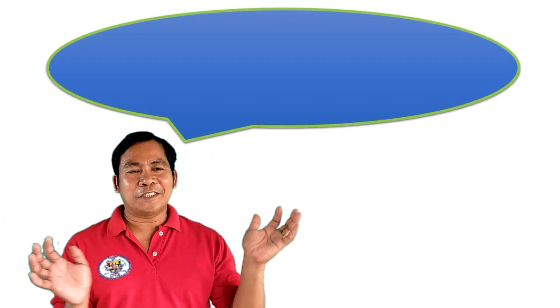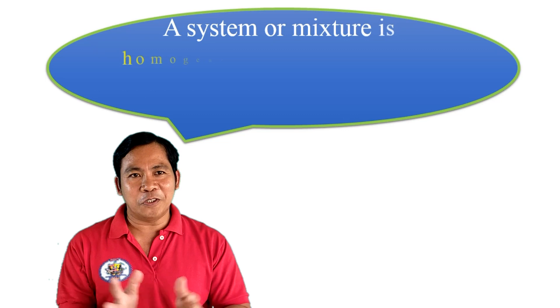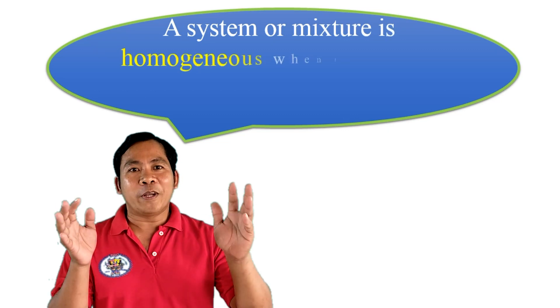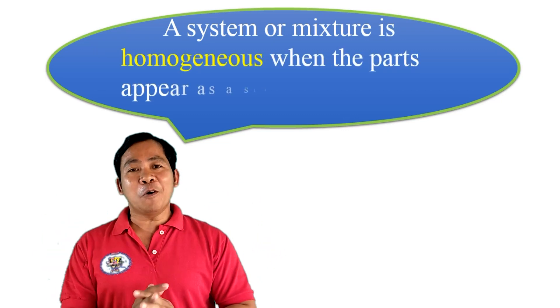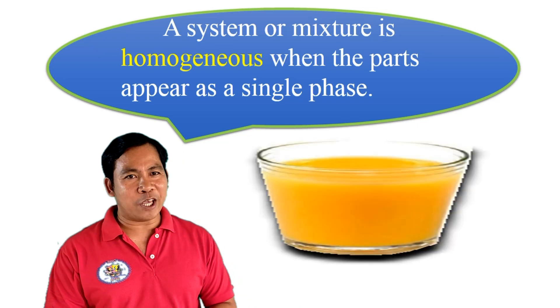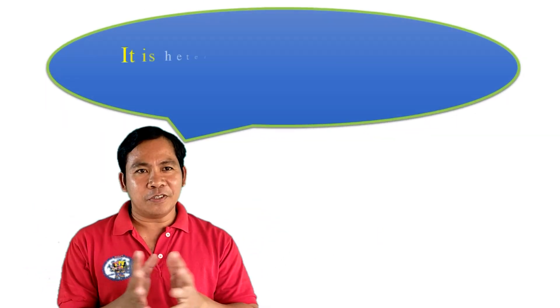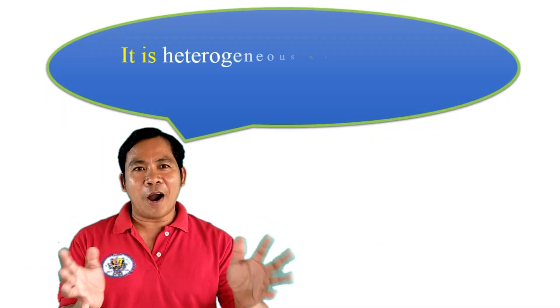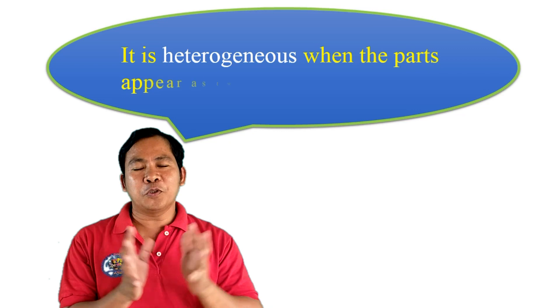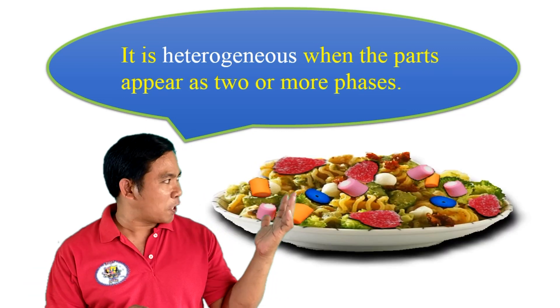A system or mixture is homogeneous when the parts appear as a single phase, forming a homogeneous mixture. It is heterogeneous when the parts appear as two or more phases, forming a heterogeneous mixture.